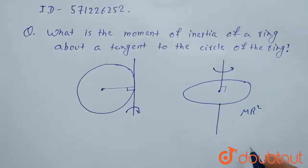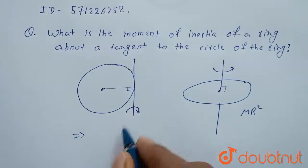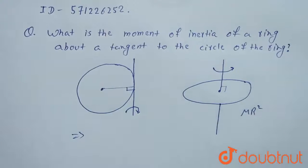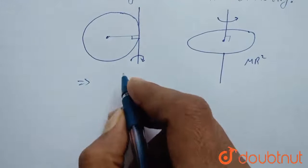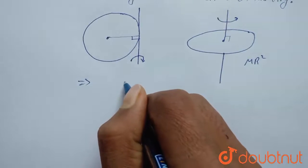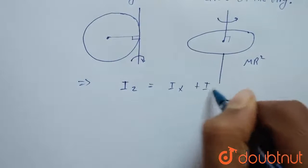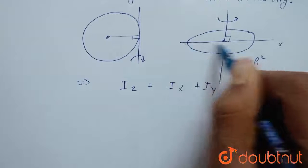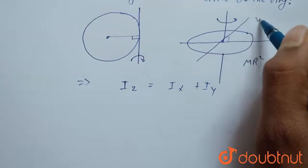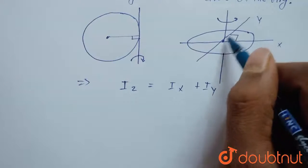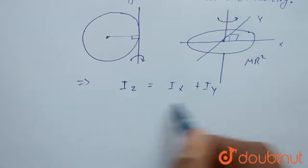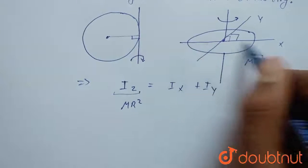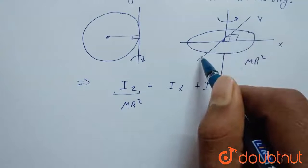Now I will apply the Perpendicular Axis Theorem to find the moment of inertia about an axis passing through its diameter. The theorem states that I about Z equals I about X plus I about Y. That is, I about the Z-axis equals I about this diameter axis plus I about this other diameter axis, and all three axes are mutually perpendicular.